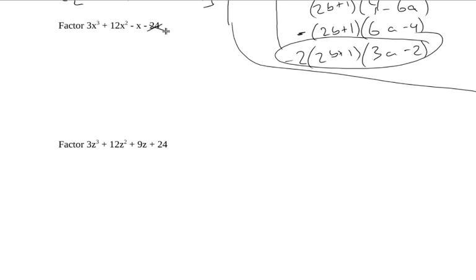Alright, on this next problem, I wrote this down wrong. It appears this should have been a 4. So when we factor this one by grouping, these two terms, my greatest common factor is 3x squared. These two terms, I guess I should say what's left over, x plus 4.